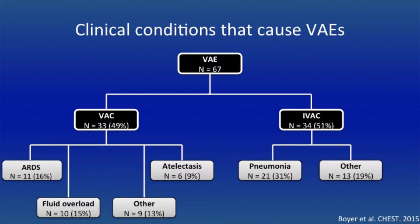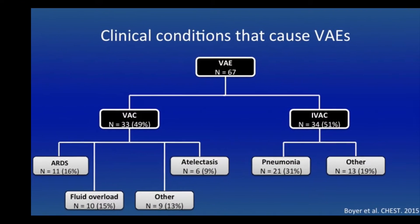Four case series have tried to identify the clinical conditions that cause VAEs. The most recent, published by Boyer and colleagues, prospectively looked at about 1,200 consecutive episodes of mechanical ventilation. They found that ARDS, pneumonia, fluid overload, and atelectasis accounted for the majority of the 67 VAE cases found during that one-year period. The other three studies observed similar findings, and it is now well-established that these four conditions are the foremost common causes of VAEs.